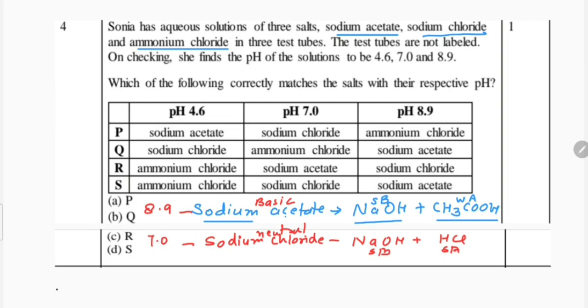Now what's left is ammonium chloride. Whenever chloride is there means HCl is there, and whenever ammonium is there means ammonium hydroxide, so it is NH4OH.